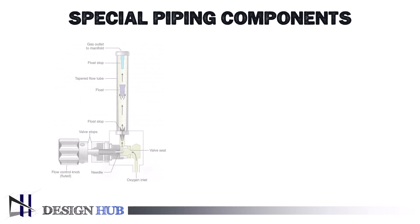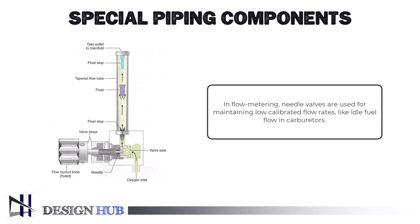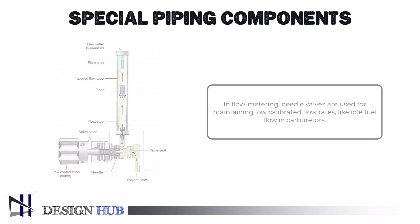One example: needle valves are employed in flow metering applications, particularly in situations where a low, calibrated flow rate needs to be maintained continuously for a certain amount of time, such as the idle fuel flow in a carburetor.